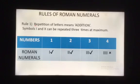Rule 1. Repetition of letters means addition. Symbols I and X can be repeated 3 times at maximum. For example, let me explain the rule with the help of example. 1 is written as I, 2 is written as 2 times I, 3 is written as 3 times I, but we cannot write 4 as 4 times I.